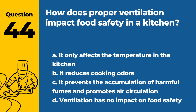Question 44. How does proper ventilation impact food safety in a kitchen? a. It only affects the temperature in the kitchen. b. It reduces cooking odors. c. It prevents the accumulation of harmful fumes and promotes air circulation. d. Ventilation has no impact on food safety. Answer: c. It prevents the accumulation of harmful fumes and promotes air circulation. Proper ventilation is essential for maintaining a safe kitchen environment.